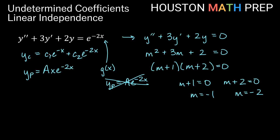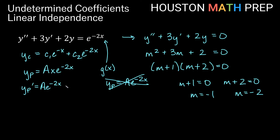Notice this y sub p is not a constant multiple of anything in y sub c. Taking the first derivative using the product rule on a x times e to the negative 2x, we get y sub p prime equals a e to the negative 2x minus 2ax e to the negative 2x.